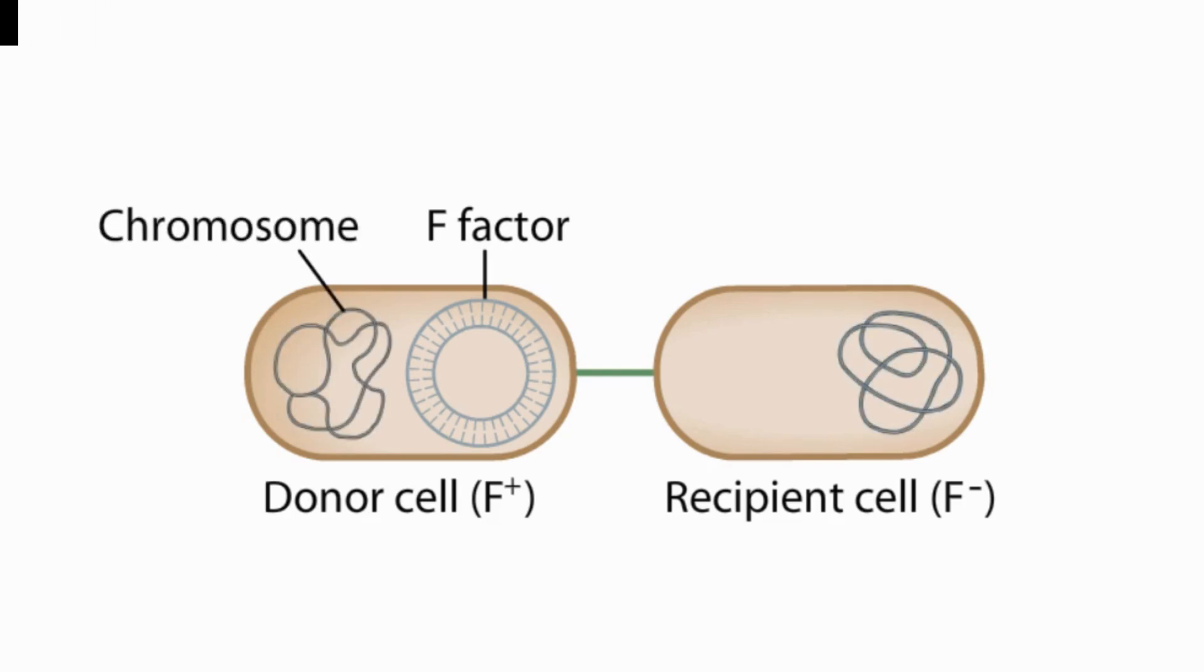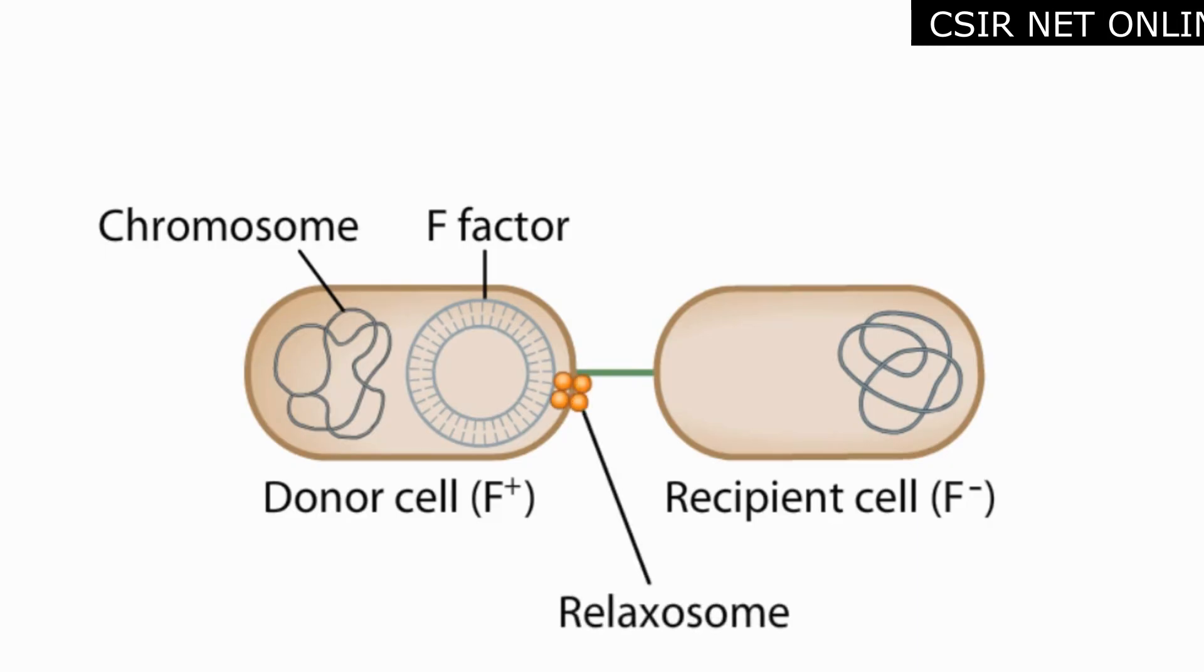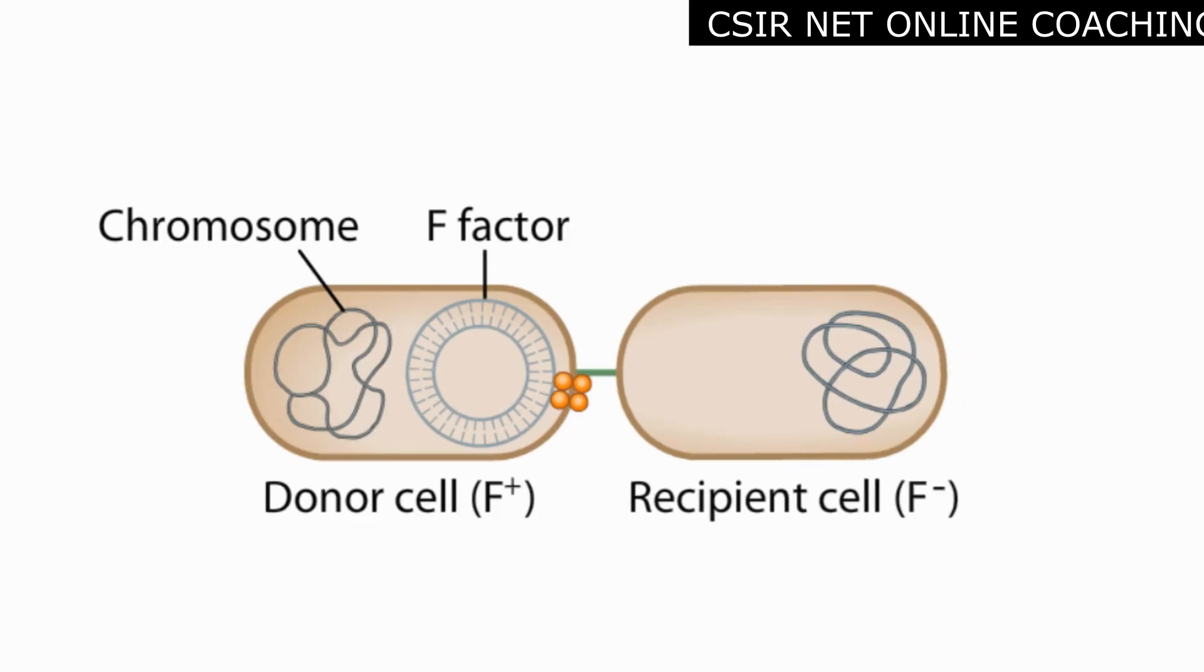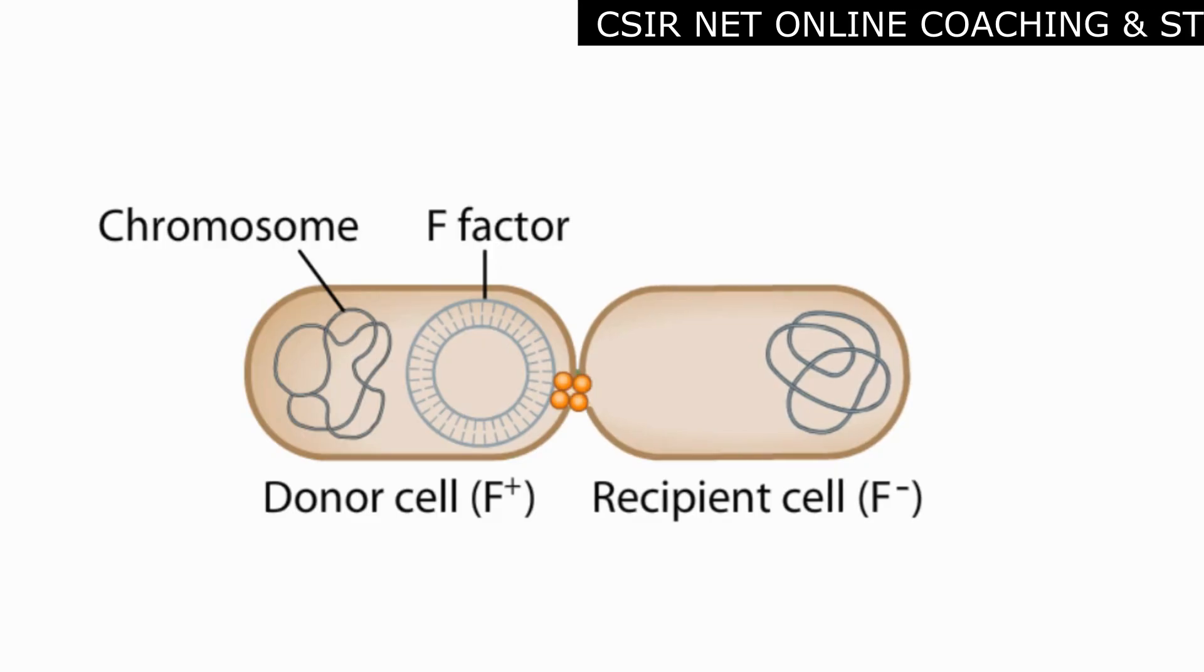The F plus cell makes a variety of proteins involved in the DNA transfer, including a large multiprotein complex called relaxosome at the base of the pilus. Conjugation begins when cell-cell contact occurs between the F plus cell and F minus cell. The membranes fuse, forming a membrane bridge.